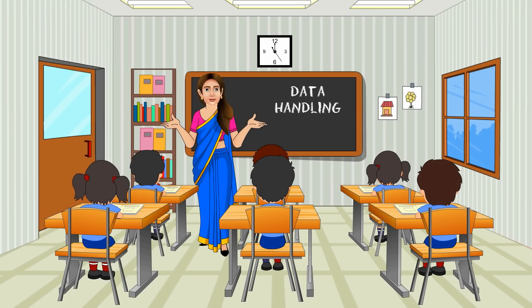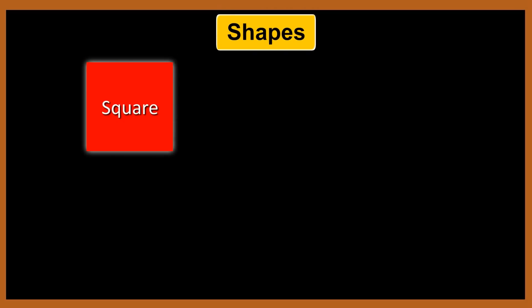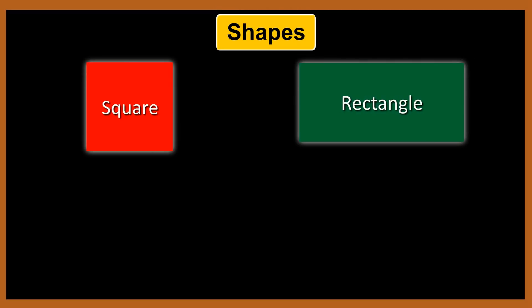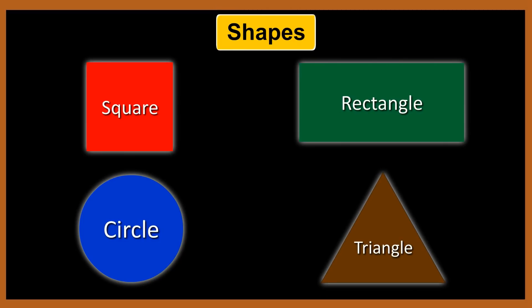Data Handling. Hello children, let us recall some simple shapes. It is a square. It is a rectangle. Here is a circle and this one is a triangle.